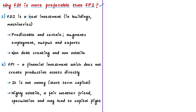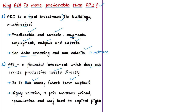FDI is preferable because it is real investment directly in the company — certain, predictable, takes production risks, and has a stabilizing impact. It directly augments employment, output, and exports. The major merit of FDI is that it is non-debt-creating and non-volatile. In contrast, FPI is a financial investment aimed at getting profits from shares or interest from deposits — it can be called 'hot money.' Portfolio investors stay in the capital market only for a short period, and FPI is considered fluctuating capital.